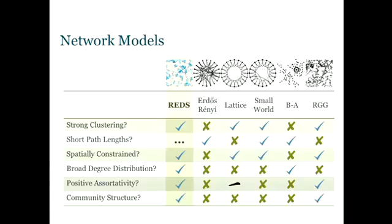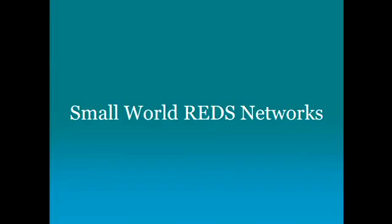The one thing that was missing was short path lengths, a small world sort of effect. Because it's basically a lattice, a sort of distorted lattice, some parts of the network are very far from other parts.